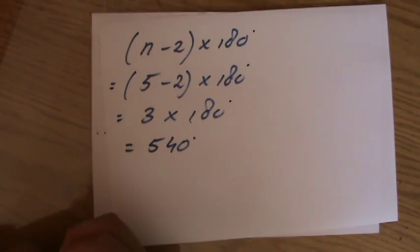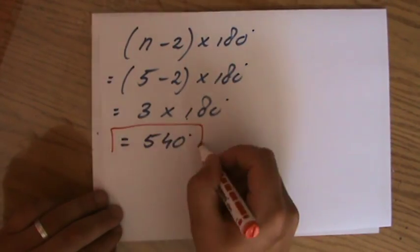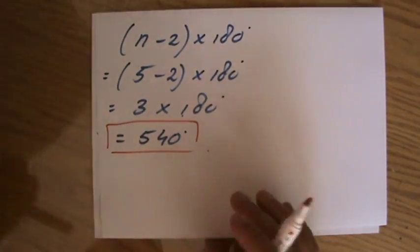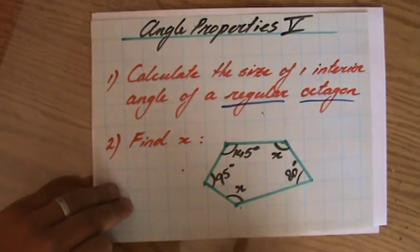So a pentagon, any pentagon, the sum of the interior angles add up to 540 degrees. But as you can see, some of those angles are given to you. 95, 145, 80.